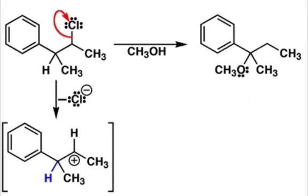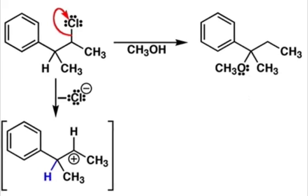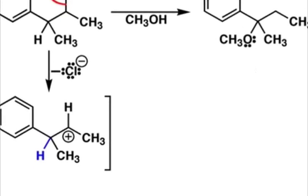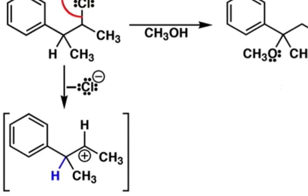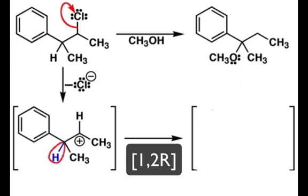Any time you see a carbocation in a mechanism, you should always consider rearrangements. In this case, we have a secondary carbocation. Can we rearrange this carbocation with a 1-2 shift to create a more stable carbocation? If the answer is yes, that carbocation rearrangement is going to occur. If the answer is no, you're not going to have a rearrangement. Here, we can do a hydride shift and move that blue hydrogen group over to that carbocation.